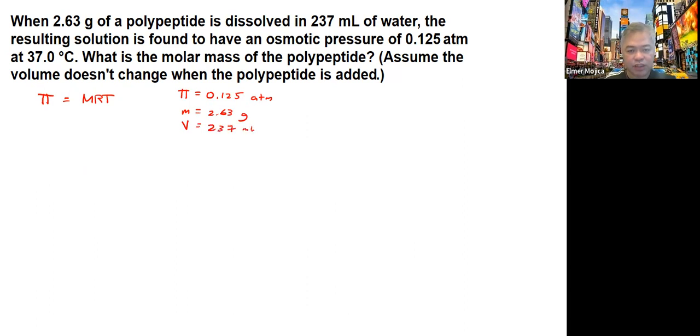We're given the volume, which is 237 mL, and we're also given the temperature, which is 37.0 degrees Celsius, which is plus 273, will give you 310 K.